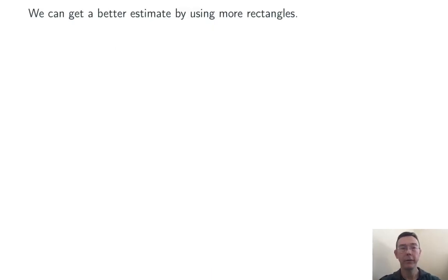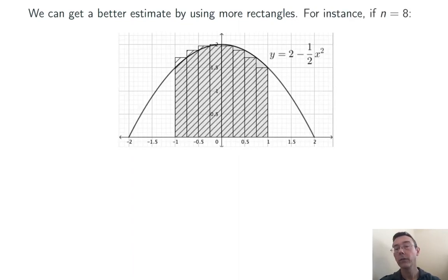We should be able to get a better estimate just by using more rectangles. For instance, let's repeat that process that we just did using 8 rectangles instead of 4. I'm going to continue to keep them all of the same width, so now their width is 0.25. And again, I'm going to take the height to be the value of the function at the right-hand endpoint of each of those small intervals.